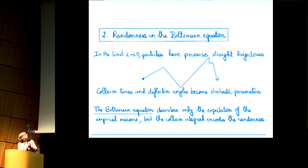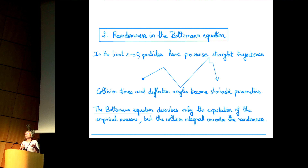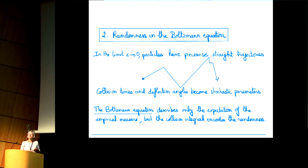If you look at one particle in this gas, you see that it has a piecewise straight motion: transport, then a collision where you are deflected, then another straight line, and so on. In the original system all these deflections are completely deterministic — they depend on positions and velocities of other particles. But in the limit, if you look at just one typical particle, all these deflections will become stochastic: both the time for the collision and the deflection angle will be random parameters.